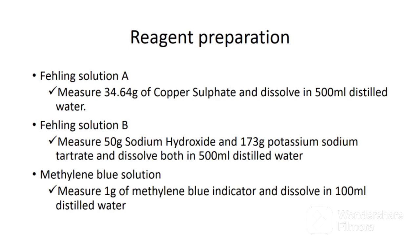The next reagent to prepare is Fehling Solution B, which contains sodium hydroxide and potassium sodium tartrate. To prepare it, measure 50 grams of sodium hydroxide and 173 grams of potassium sodium tartrate and put them in a 500 ml volumetric flask. Add a small amount of water and shake to dissolve all the crystals, then top up to the mark with distilled water.